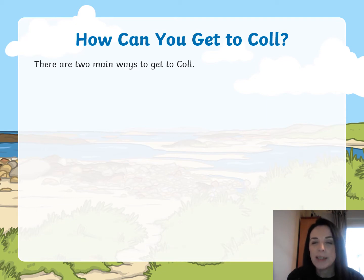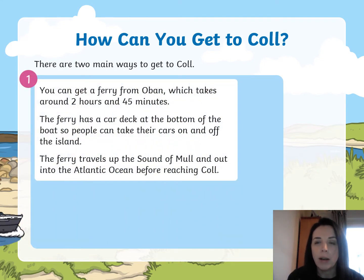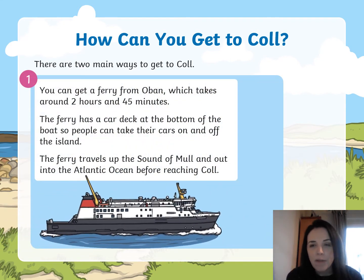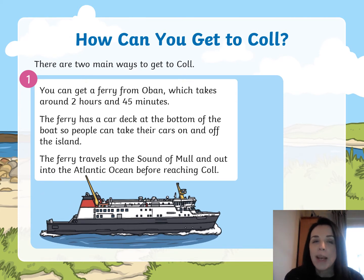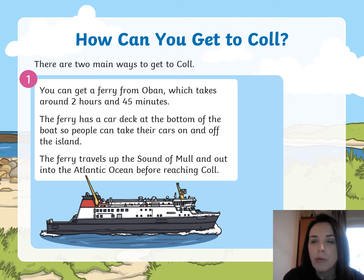How do you get to Coll? Obviously it's an island, so how would you get there? Can you remember how people would get to St Lucia? There are two main ways to get to the Isle of Coll. The first way is by getting a ferry — a large boat that carries lots of people — from Oban, which takes around two hours and 45 minutes. The ferry has a car deck at the bottom so people can take their cars on and off the island. The ferry travels up the Sound of Mull and out into the Atlantic Ocean before reaching Coll.